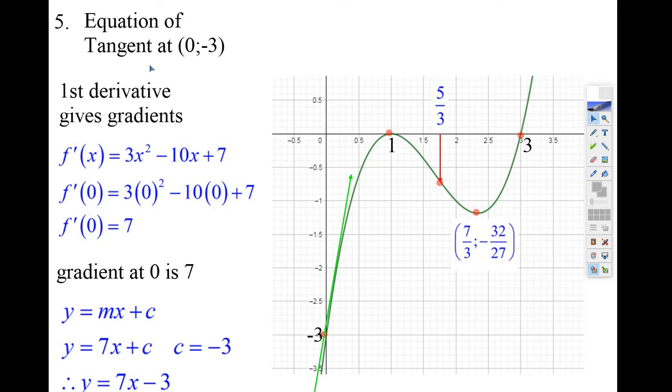Let's look at the next question. The next question says, find the equation of the tangent when x equals 0. Well, when x is 0, y is minus 3. They want the equation of this tangent line right here. They want the equation of the right at minus 3.